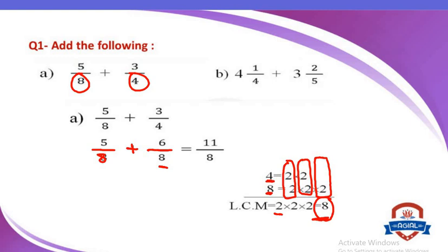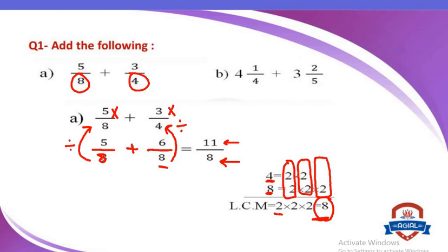I will take the new denominator divided by the old denominator. 8 divided by 8 equals 1; 1 times 5 equals 5. Plus: 8 divided by 4 equals 2; 2 times 3 equals 6. So the new fractions will be 5 over 8 plus 6 over 8. Now they have the same denominator. 5 plus 6 equals 11. So I write 11 up and 8 down — the answer is 11 over 8.